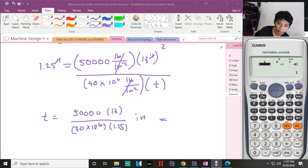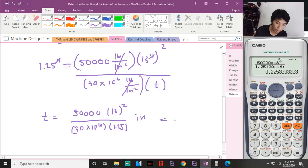The answer for your thickness will be - mode - 50,000 times 13 divided by 1.25 times 30 times 10. Wait, I didn't square 30. Should be squared. The thickness is 0.225 inch, 0.225, that is the thickness.